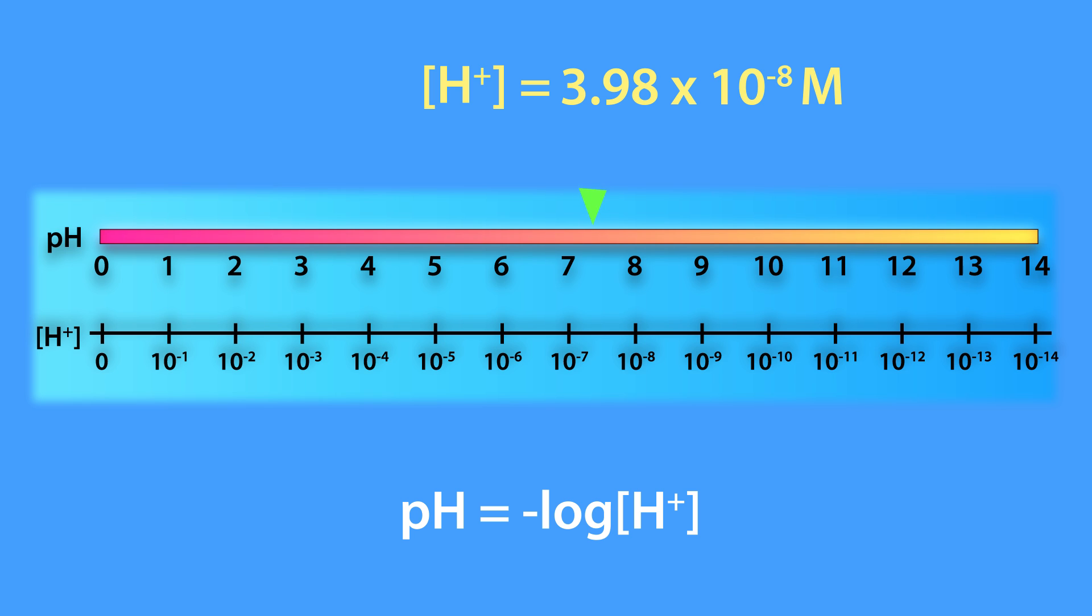While the pH of a solution with a hydrogen ion concentration of 2.7 times 10 to the minus 5 molar equals a pH of 4.57.